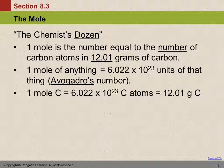The mole is defined as the number of things equal to the number of carbon atoms in 12.01 grams of carbon. More importantly, a mole of anything is 6.022 times 10 to the 23rd units of that thing. So it's not 12, it's not 6 — it's 6.022 times 10 to the 23rd.